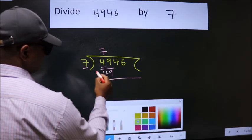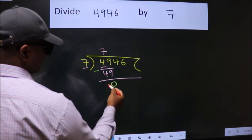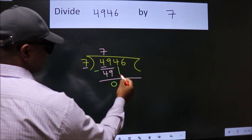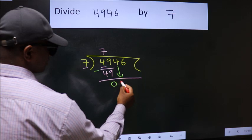Now we should subtract. We get 0. After this, bring down the beside number. So, 4 down.